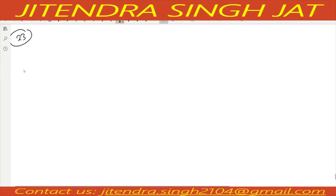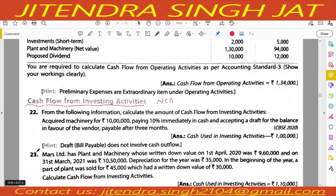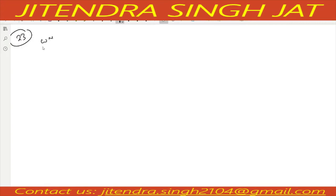Question number 23. Mars Limited has plant and machinery whose written down value on 1st April 2020 was 9 lakh 60,000. Depreciation for the year was rupees 35,000. A part of plant was sold for 45,000 which had a written down value of rupees 30,000. We need to prepare plant and machinery account to get purchase and sale figures.